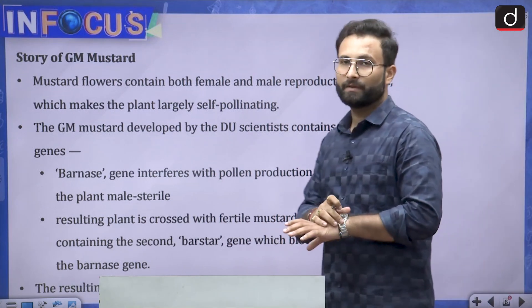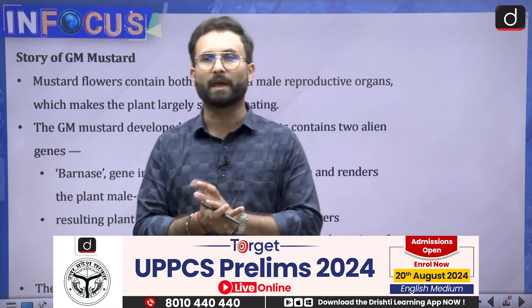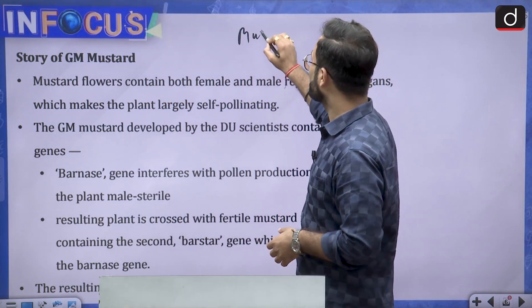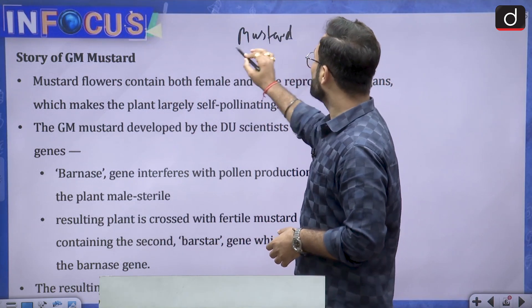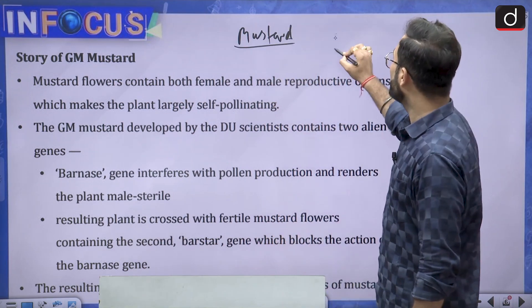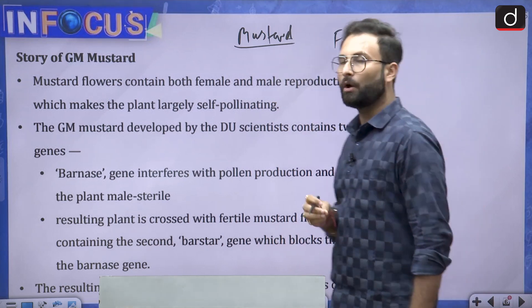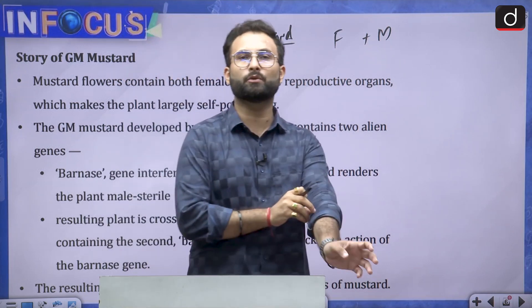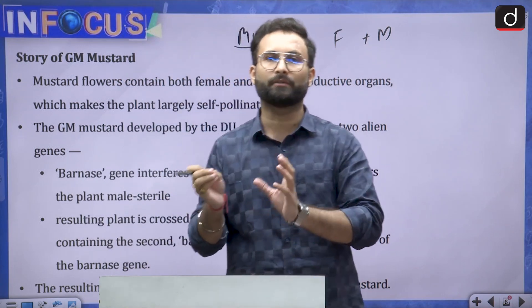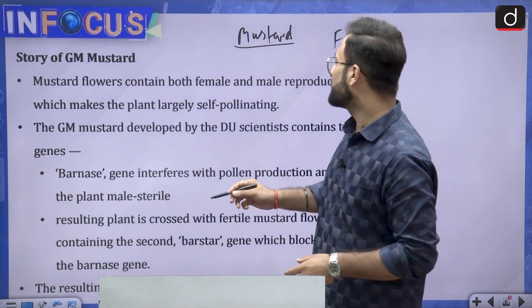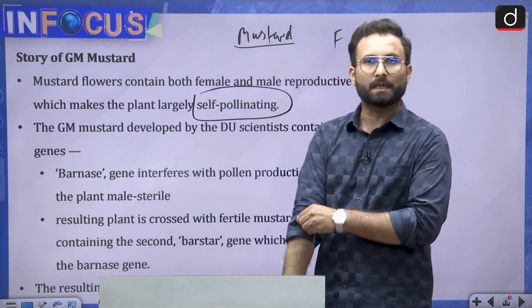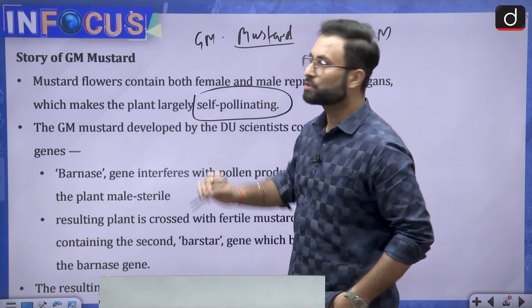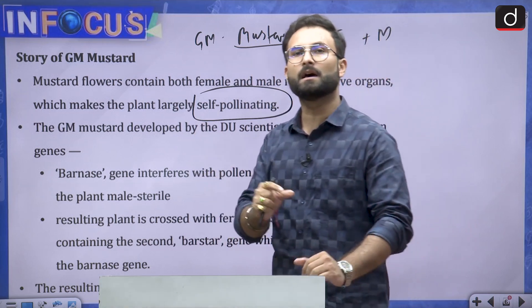Now, the story of GM Mustard — it is obviously a genetically modified crop. In the flower of mustard, both male and female reproductive organs are present, which is why they do not have to rely on insects for pollination. They are basically a self-pollinating variety. When it comes to the genetic modification of GM Mustard, the modification is done in two ways.